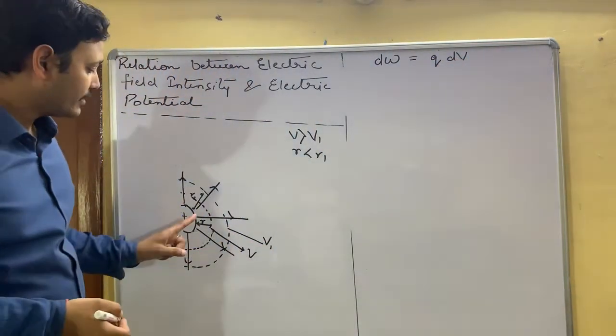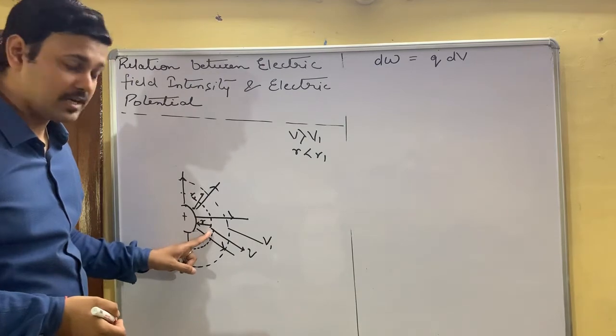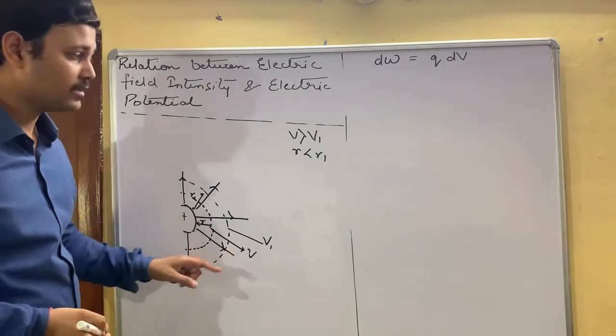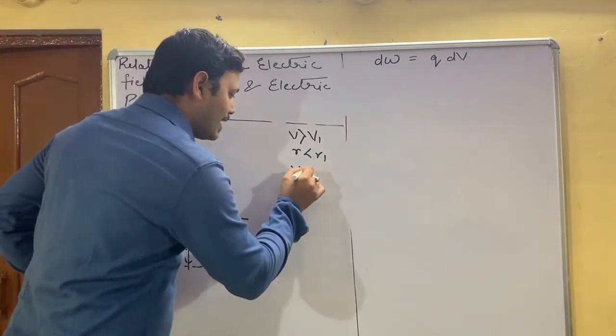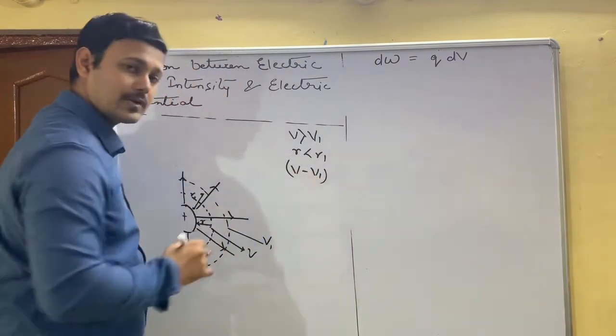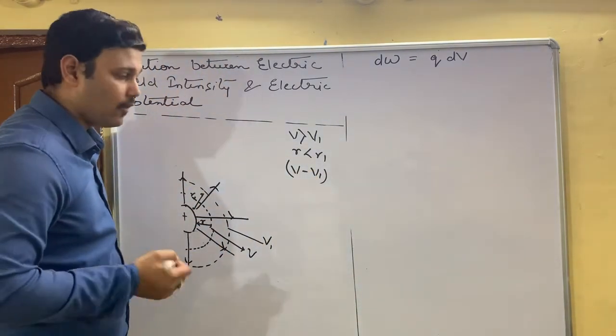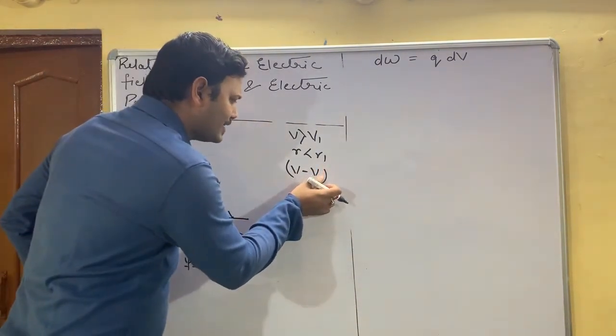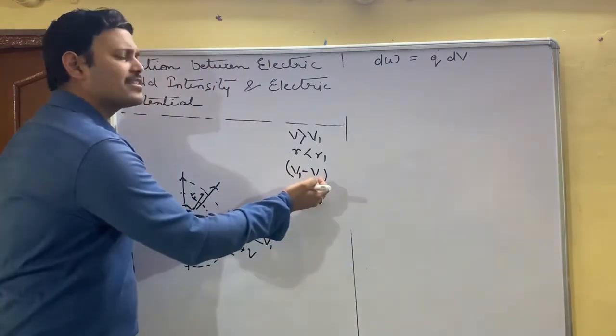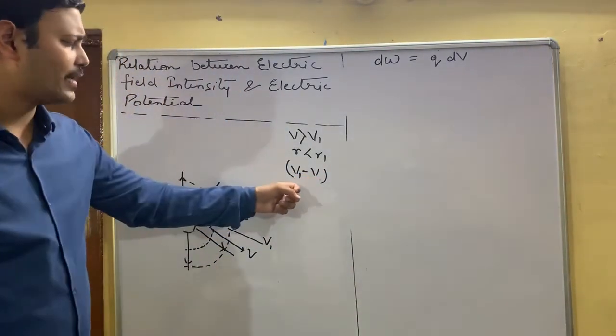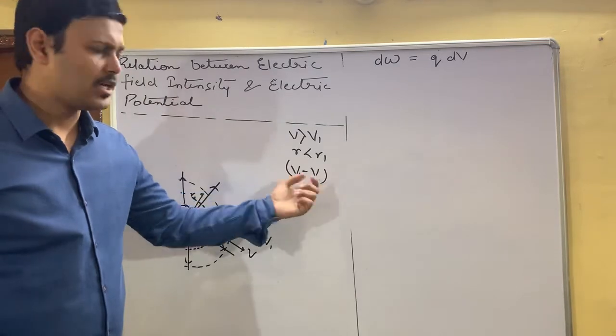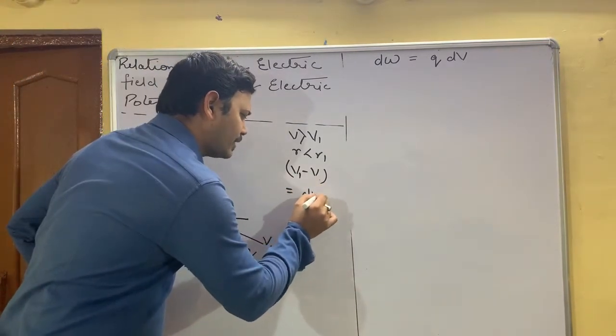Why dV? Because this is the first potential V, second potential V1. So V minus V1. Or we can also write it as V1 minus V. Final one minus initial, you can write. Final one is V1, the initial one is V. So the difference is given as delta V.